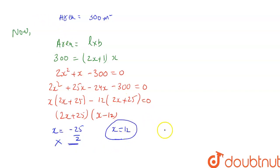When breadth is 12, length was 2 times x plus 1. So, this becomes 2 times 12 plus 1, which is 25 meters, and breadth is 12 meters.